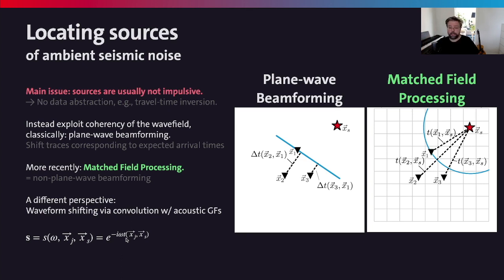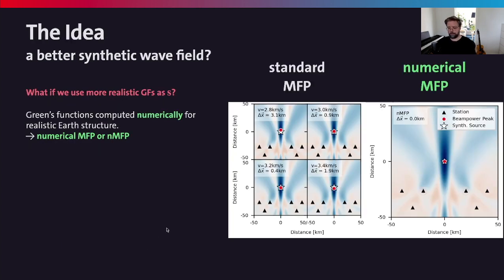The question we asked ourselves is: what happens if we use a different representation of our synthetic wave field? Instead of the analytical expression, we use as realistic as possible a representation of wave propagation in earth. We approached that by using Green functions computed numerically for realistic earth structure, and we call this numerical matched field processing.